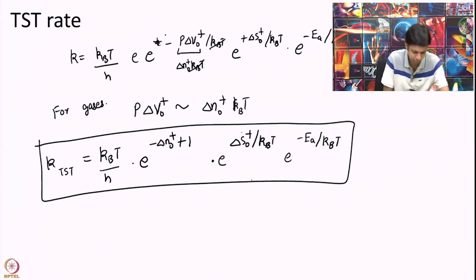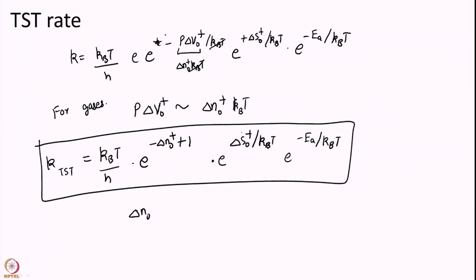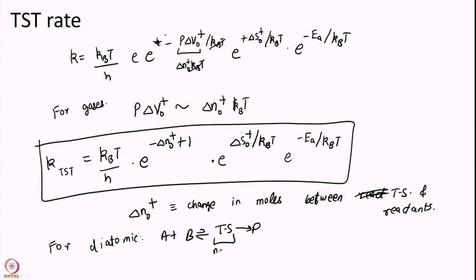And delta N naught again let me just define very clearly delta N naught is the change in moles between transition state and reactants. So, for diatomic A plus B going to transition state your N here is 1 your N here is 2. So, delta N naught is 1 minus 2 equal to minus 1.